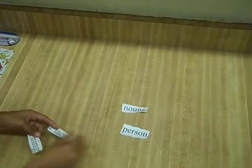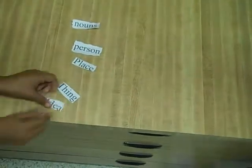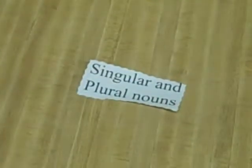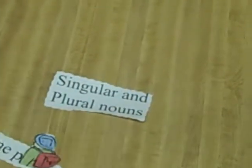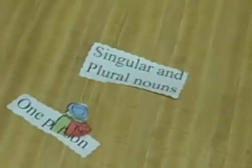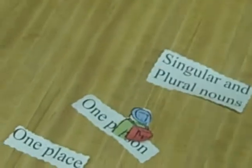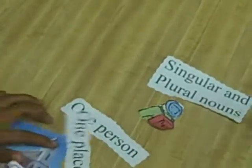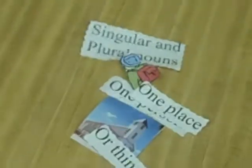Nouns are a person, place, thing, or idea. Singular and plural nouns. A singular noun names one person, place, thing, or idea, and someone who owns something.